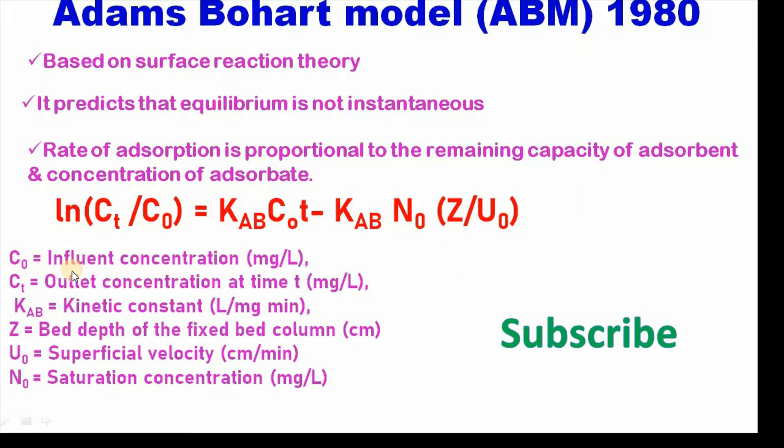Where C0 is the influent concentration in milligrams per liter, Ct is the outlet concentration at time t, KAB is the kinetic constant in liters per milligram minute, Z is the bed depth of the fixed bed column in centimeters, U0 is the superficial velocity in centimeters per minute, and N0 is the saturation concentration in milligrams per liter.